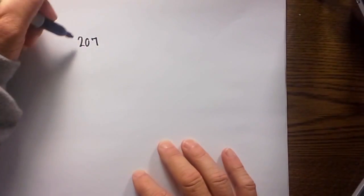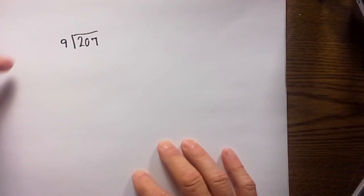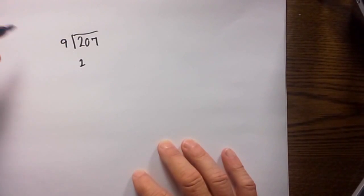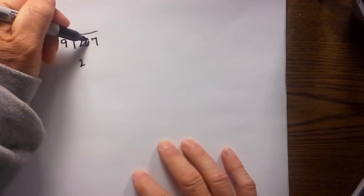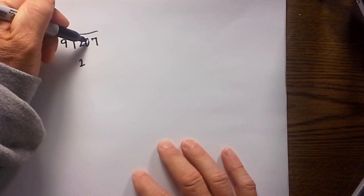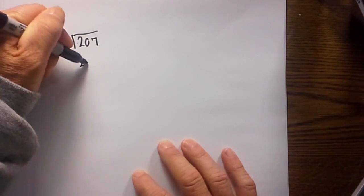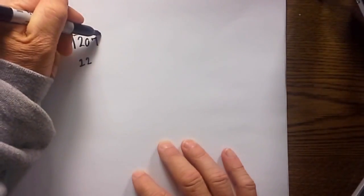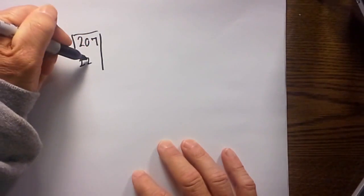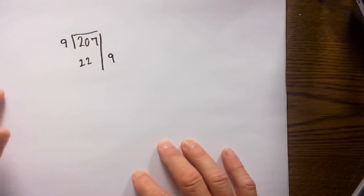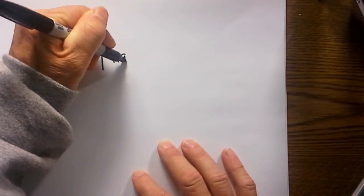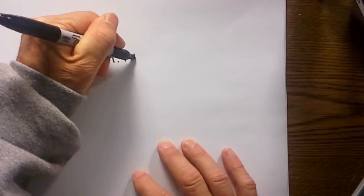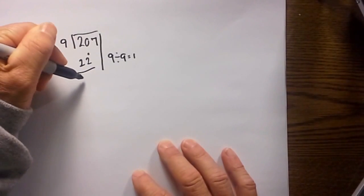Say we have the number 207 divided by 9. Well, this technique is really simple. First digit you bring down. You then take this digit and add it to the second digit, so 2 plus 0 is 2. Then since this is the last number, I take 2 plus 7 and write it right over here. Then divide it by 9. 9 divided by 9 is 1, so I place the 1 here. So 207 divided by 9 is 23.